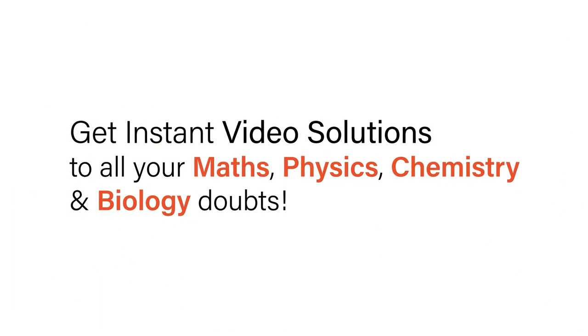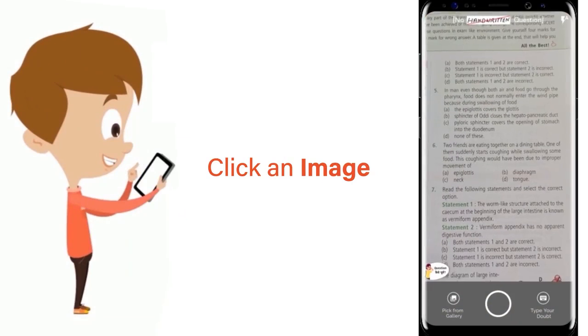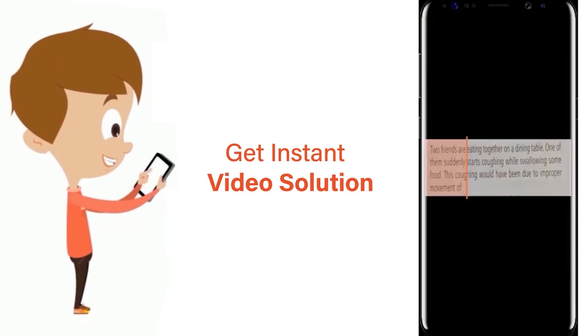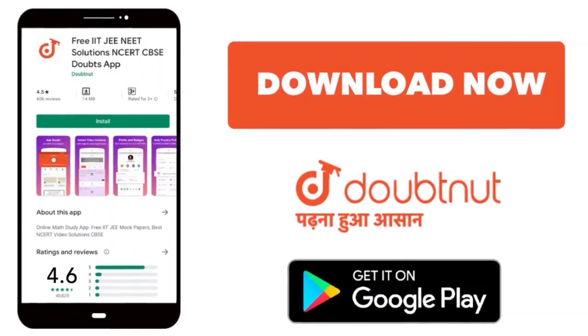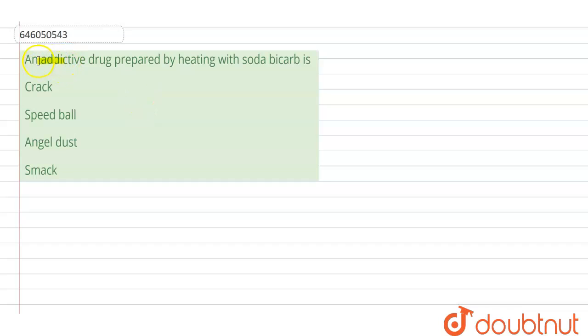With Doubtnut, get instant video solutions to all your maths, physics, chemistry, and biology doubts. Just click the image of the question, crop the question, and get instant video solution. Download Doubtnut app today. Hello students, the question here says that the addictive drug prepared by heating with sodium bicarbonate is which out of the following.